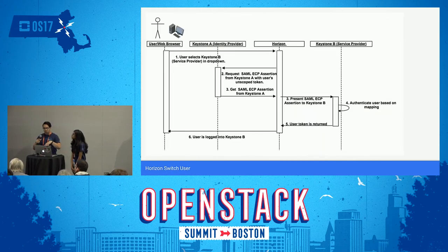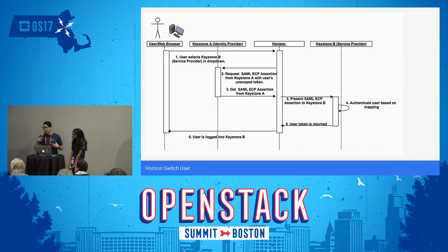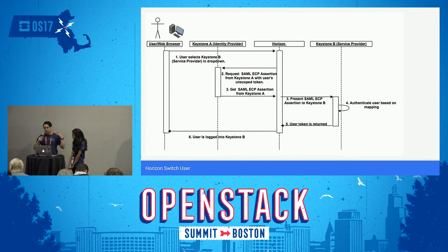Once you click to switch service providers, Horizon talks to Keystone, provides the unscoped token kept in the session, gets the SAML assertion, and gives it to the service provider. Based on the mapping configured on the service provider, you are logged in with a particular user. The user is then logged into Keystone B and can access whatever resources that Keystone B protects.